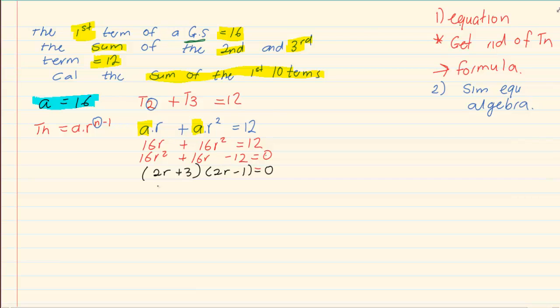So we have r is equal to minus 3 over 2, and we have r is equal to a half.